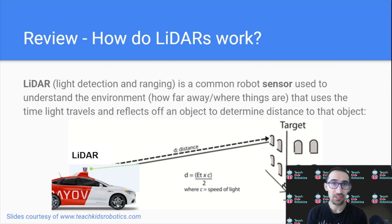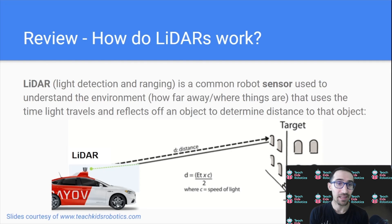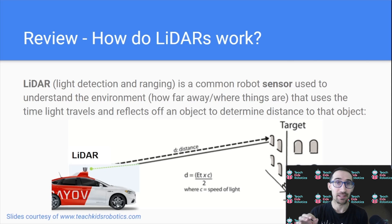First, let's review how LiDARs work. LiDARs, or light detection and ranging sensors, are a common robot sensor used to understand the environment — how far away and where things are — using the time light travels and reflects off an object to determine the distance to that object. Using many of these light rays, you can get a good idea of all the objects in your environment.